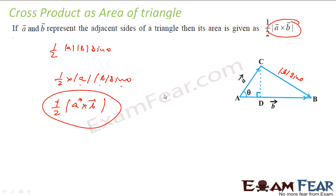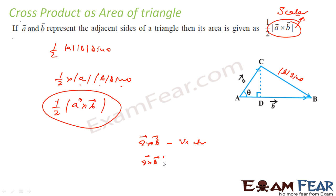Please note: the area of a triangle with A and B as adjacent sides, with theta as the angle between them, is ½|A×B|. I am taking the magnitude of A×B because the area of a triangle is scalar. A×B is a vector, but since I am talking about area, I take the magnitude of A×B to get a scalar quantity.